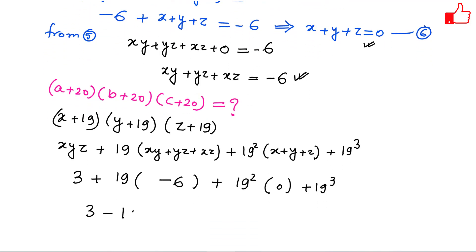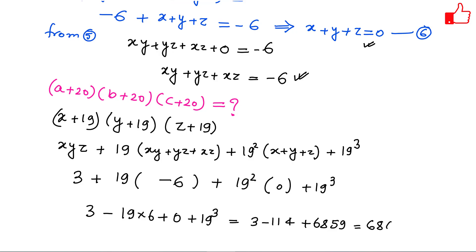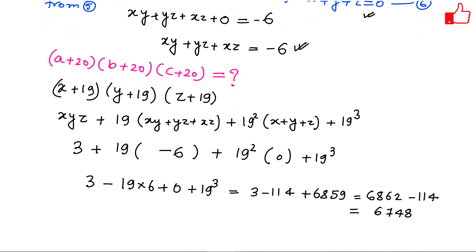So the value is 3 - 19×6 + 0 + 19³ = 3 - 114 + 6859 = 6862 - 114 = 6748. This is the value of the given expression (a+20)(b+20)(c+20) = 6748.